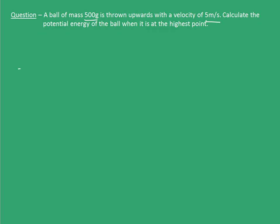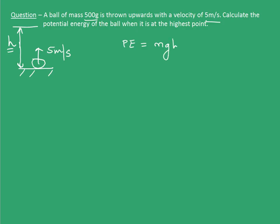We will see what happens in this question. A ball is thrown upwards with a velocity of 5 meters per second. It reaches some height — let's say I denote this height by h. Now, I have to basically find this h in order to calculate the potential energy of the ball. The potential energy of the ball at the highest point will be mgh. I know the mass of the ball and I know acceleration due to gravity. All I have to do is find h.